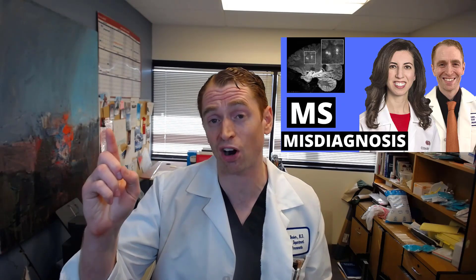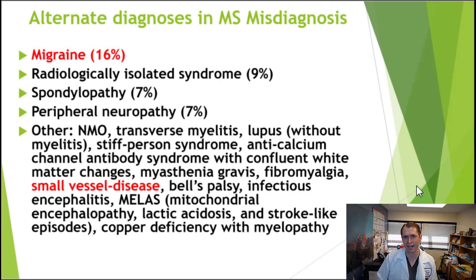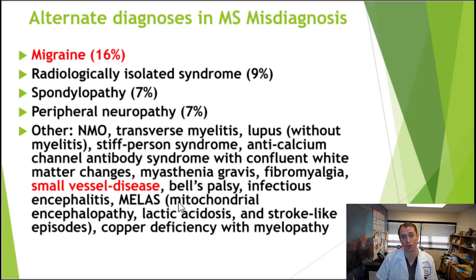A famous study by Dr. Mara Casey at Cedars-Sinai and UCLA in Los Angeles found that nearly 18% of people diagnosed with MS are misdiagnosed and actually have something else. These are the alternate diagnoses found in the study, and some of the more common ones were migraine at 16%, and small vessel disease or vascular disease of the brain known as leukoaraiosis, along with various other diseases that could mimic multiple sclerosis.